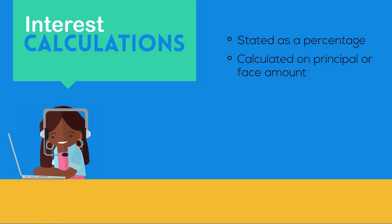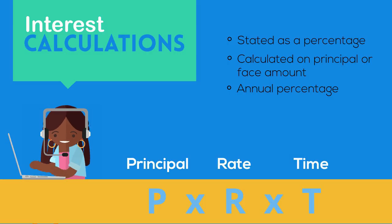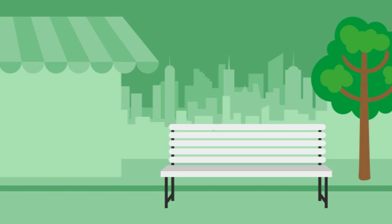Interest is stated as a percentage and is calculated on the amount loaned, called the principal amount or the face amount. The interest rate is given as an annual percentage, so if a loan is given with a 10 percent interest rate, this is the rate for the entire year. To calculate interest, we use the formula P times R times T, which stands for principal times rate times time. The principal is the amount of the loan, rate is the interest rate, and time is the portion of a year for which the interest needs to be calculated. The time component can be stated as a portion of 12 months or as a portion of 365 days, since interest accumulates every day the loan is outstanding.